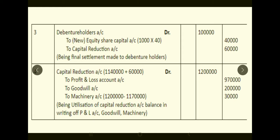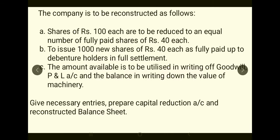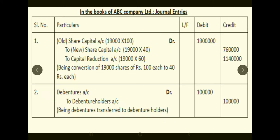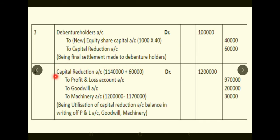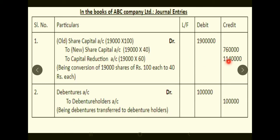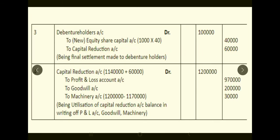So the benefit to the company from settling Rs.1,00,000 of debentures with only Rs.40,000 worth of equity shares means Rs.60,000 goes to the credit side of Capital Reduction Account. Now, adding up the Capital Reduction Account: Rs.11,40,000 from share reduction plus Rs.60,000 from debenture settlement gives a total of Rs.12,00,000.